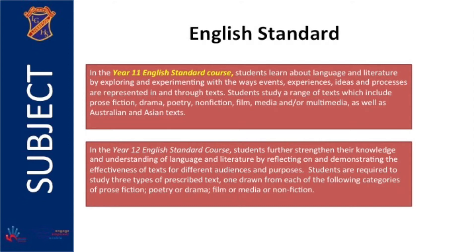In the Year 12 English Standard course, students further strengthen their knowledge and understanding of language and literature by reflecting on and demonstrating the effectiveness of texts for different audiences and purposes. Students are required to study three types of prescribed texts, one drawn from each of the following categories: prose fiction, poetry or drama, and film, media or non-fiction.